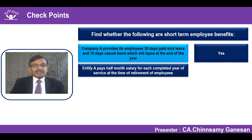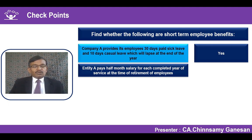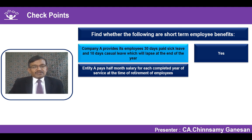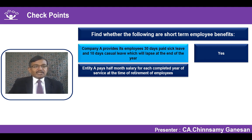A company pays half a month's salary for every completed year of service, but only at the time of retirement — not on voluntary resignation. Is this a short-term employee benefit? No. Per the definition, short-term benefits must be expected to be settled within 12 months from the end of the reporting period in which services are received. Here, although services are rendered throughout employment, entitlement arises only at retirement — so it is definitely not a short-term employee benefit.